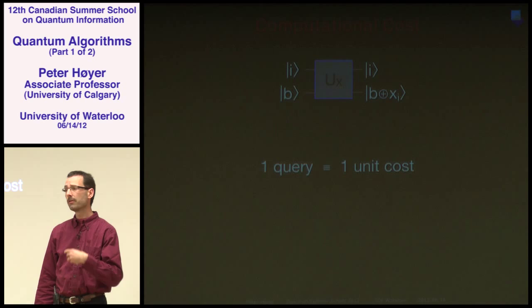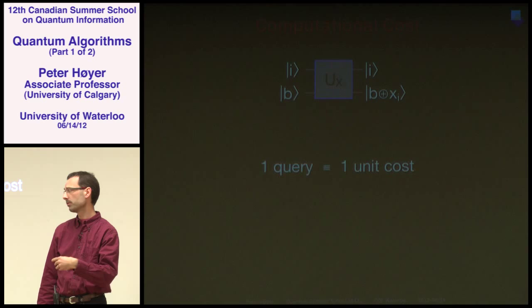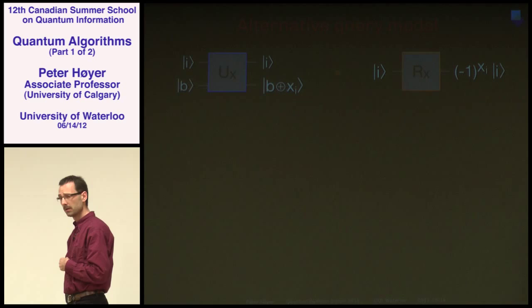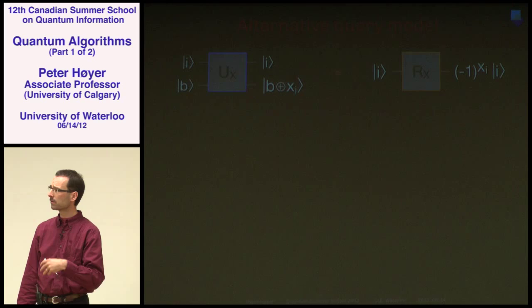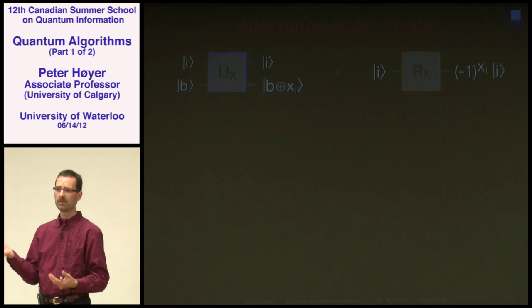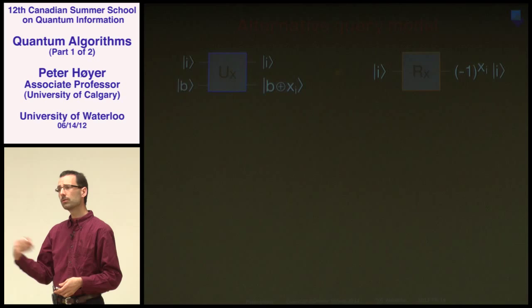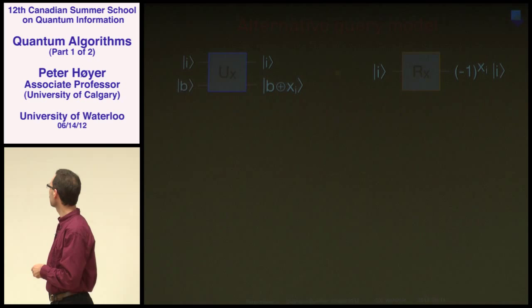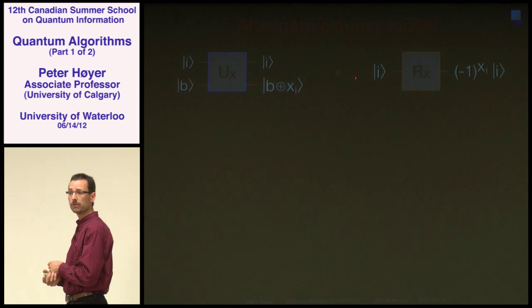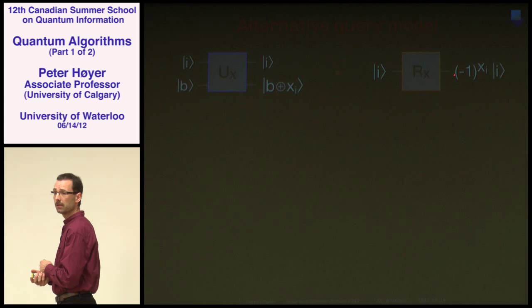We define the cost as simply the number of queries. The main cost of all the algorithms I'll discuss will be in the number of queries, so you can equate time with queries. There's also an alternative model: instead of playing with the computational basis, you play with the phases. One could define a query model where instead of flipping a coin you flip the phase.